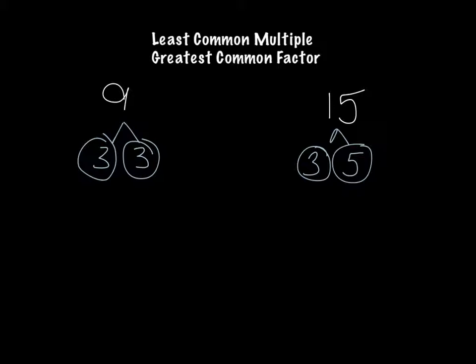The next thing we need to do is write our prime factors as a multiplication sentence. Starting with the number nine, we'll say three times three. Now remember we have a shorthand method of writing three times three. In math we can also say three squared or three to the second power. For the number fifteen, we do not have any repeating factors, so we just have three times five.